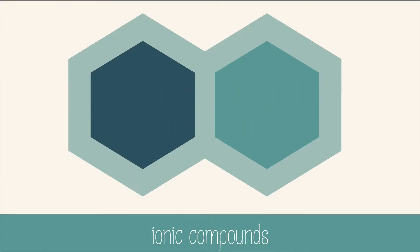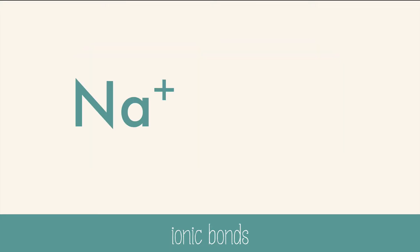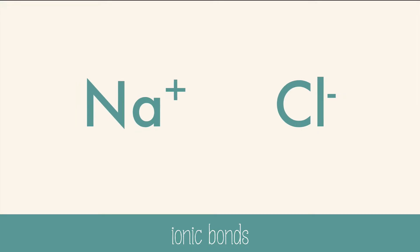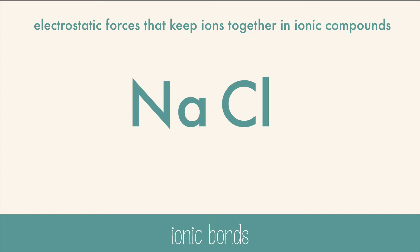Ionic compounds are formed from a cation and an anion, and usually it's a metal and a non-metal. Ionic compounds are electrically neutral. Cations and anions have opposite charges, and just like Paula Abdul sang in her song in 1989, opposites attract. Those electrostatic forces that keep ions together in ionic compounds are called ionic bonds.